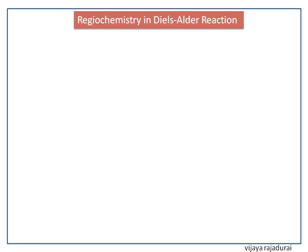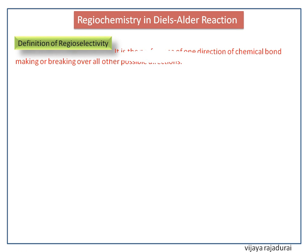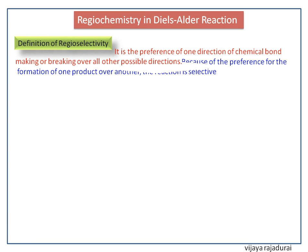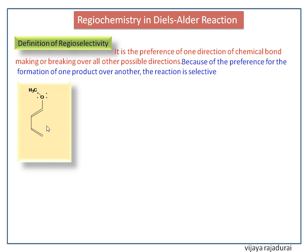Now we discuss the regiochemistry in Diels-Alder reaction. It is defined as the preference of one direction of chemical bond making or breaking over all other possible directions. Because of the preference for the formation of one product over another, the reaction is a selective reaction. The regiochemistry of the Diels-Alder reaction is determined by the perturbation of electron density on the diene and the dienophile.